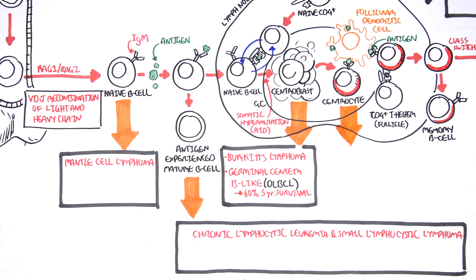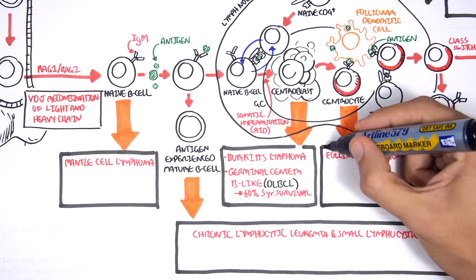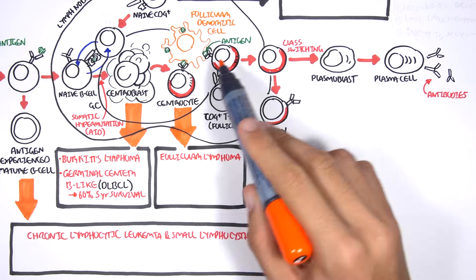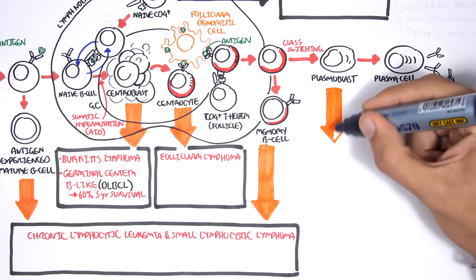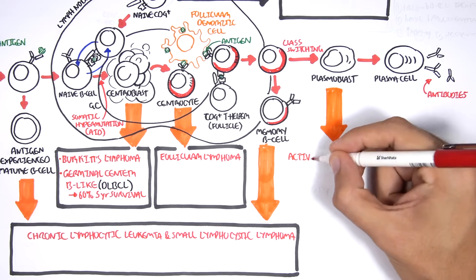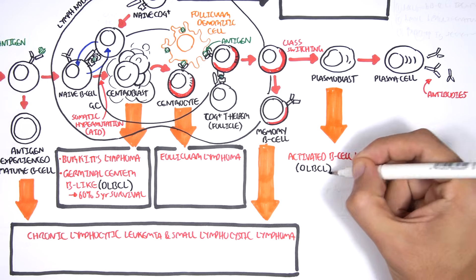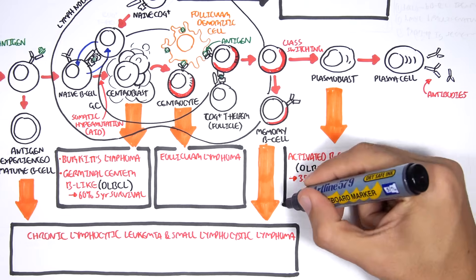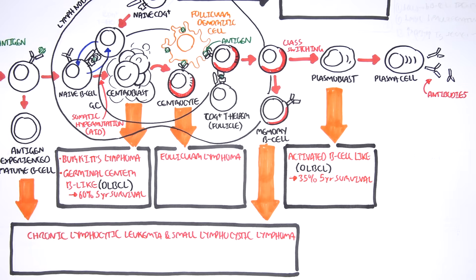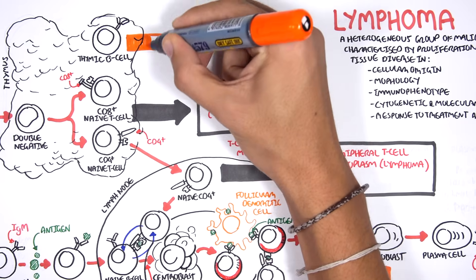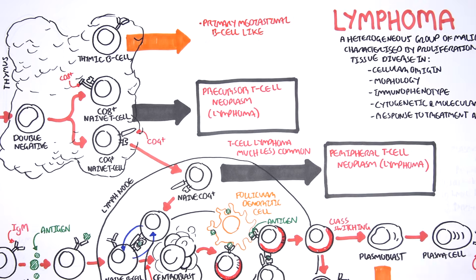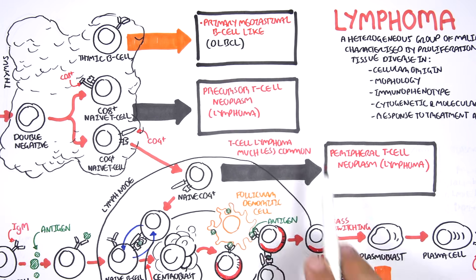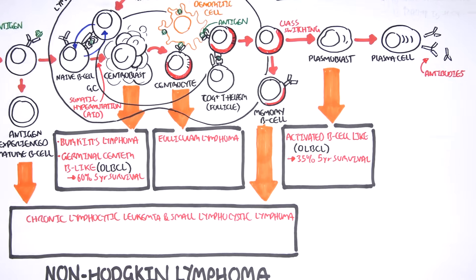The centrocytes can give rise to follicular lymphoma. Memory B-cells following class switching, which is another genetic rearrangement, can give rise to chronic lymphocytic leukemia or small lymphocytic lymphoma. Plasmablasts can give rise to activated B-cell-like diffuse large B-cell lymphoma, which has 35% five-year survival. Thymic B-cells can give rise to primary mediastinal B-cell-like diffuse large B-cell lymphoma. So we have three types of diffuse large B-cell lymphoma.